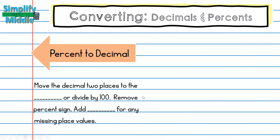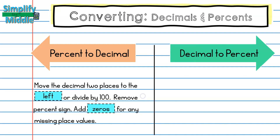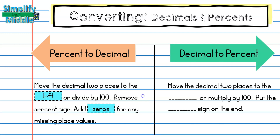Let's recap. Move the decimal two places to the left, or divide by 100, to go from percent to decimal — remove the percent sign and add zeros for any missing place value. When we go from decimal to percent, move the decimal place to the right, or multiply by 100, and then put the percent sign on the end.